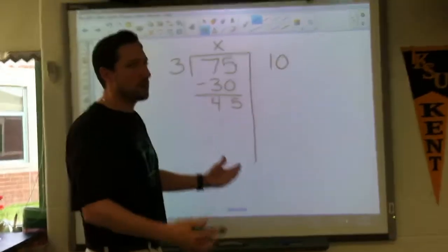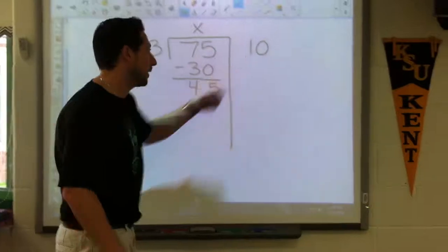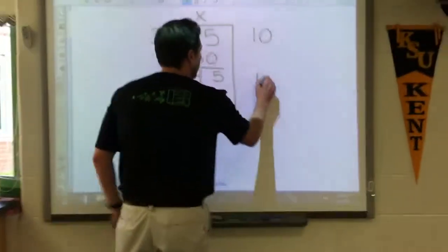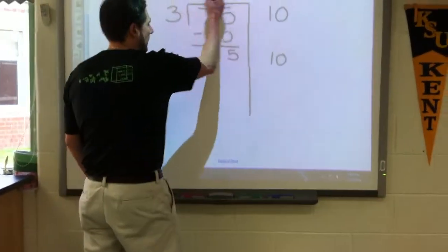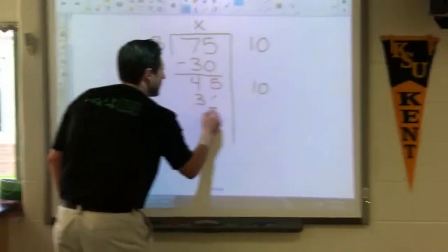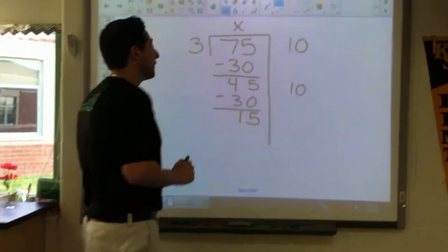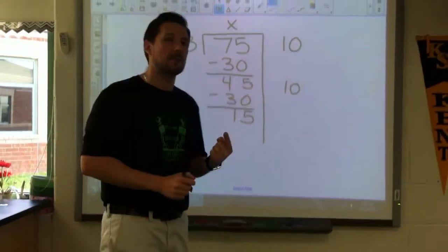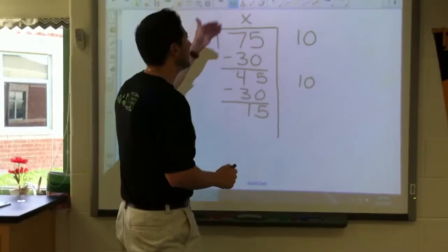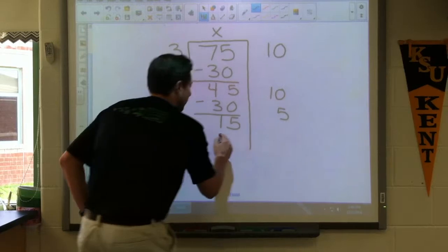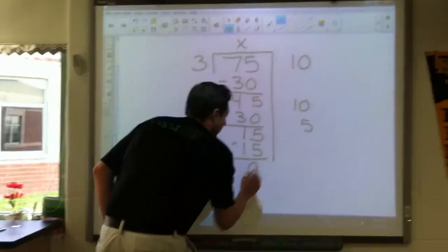I say to myself, 3 times what gets me closer to 45? Well you know what, I'm going to go times 10 again. I didn't even have to think, I already knew it was going to work. So 3 times 10 is 30. When I subtract my 30 once again, I get 15. Now I know 3 times something that's going to be 15. So 3 times 5 is 15. I subtract and I get nothing.